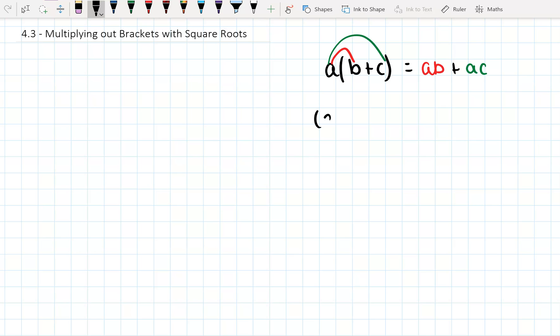Alright, if we do (a + b)(c + d), then we get, firstly, ac plus ad plus bc and plus bd. Okay, so lovely. That's what we get if we have (a + b)(c + d).